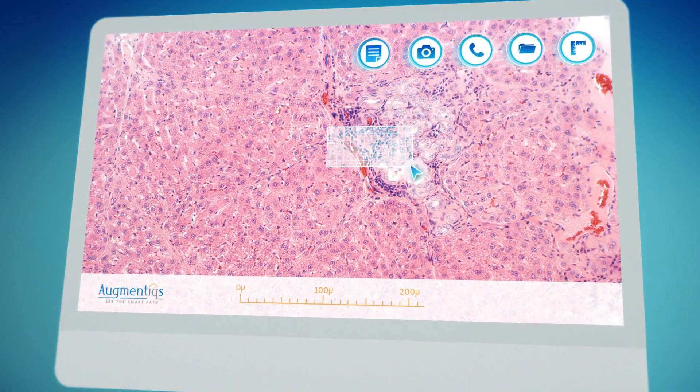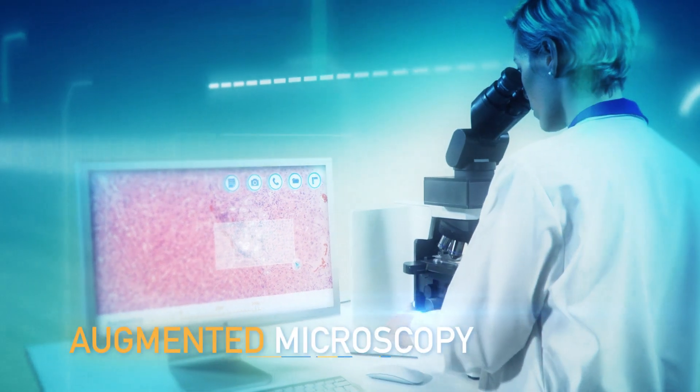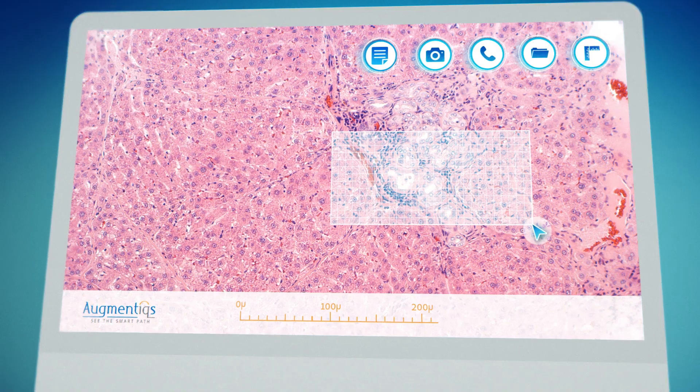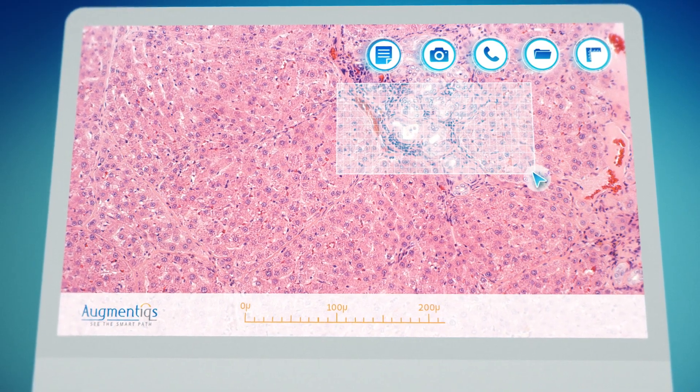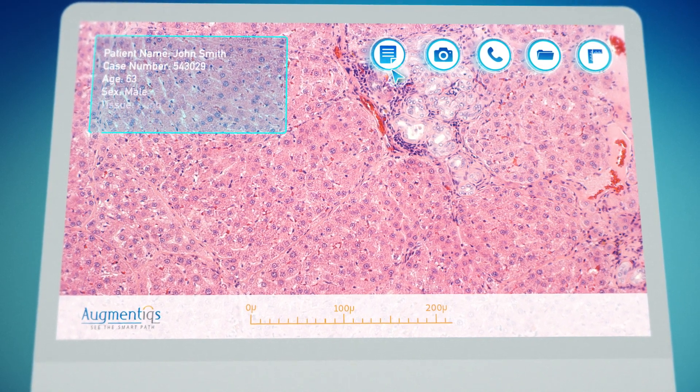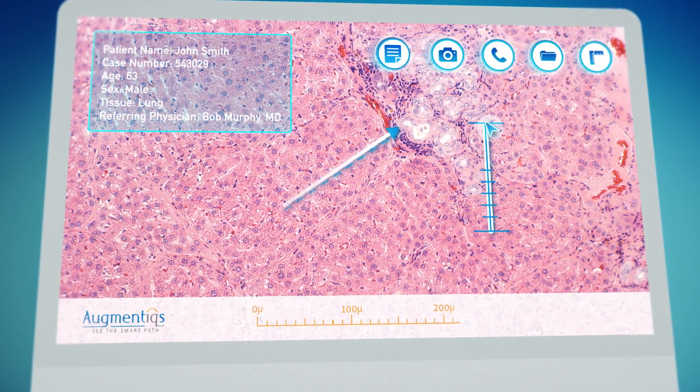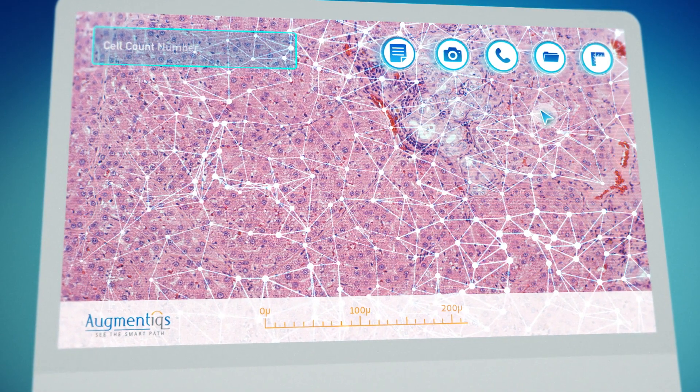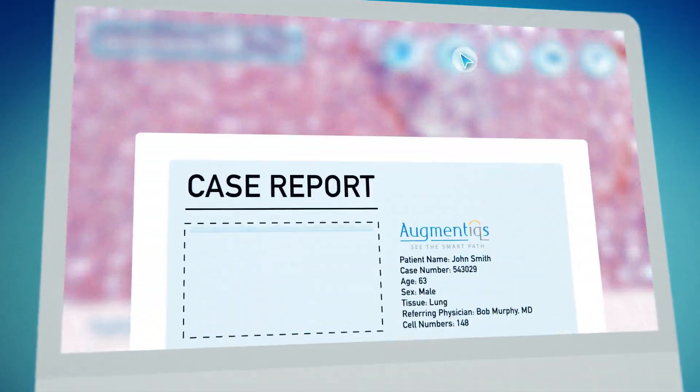A digital overlay projected within the eyepiece allows pathologists to work with the tissue sample while simultaneously viewing case data, perform morphometrics, carry out advanced cell analysis, and even add images to case reports.